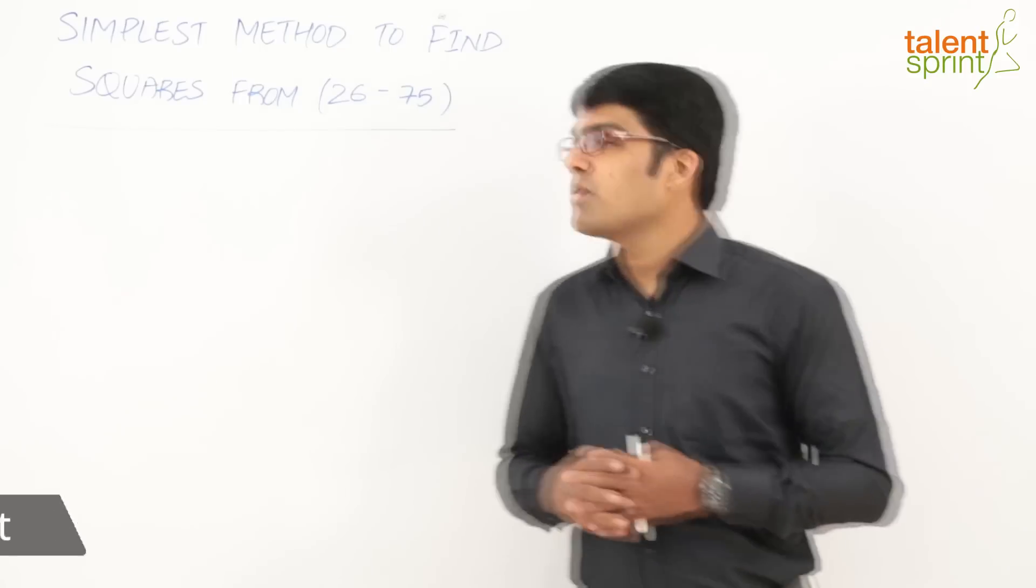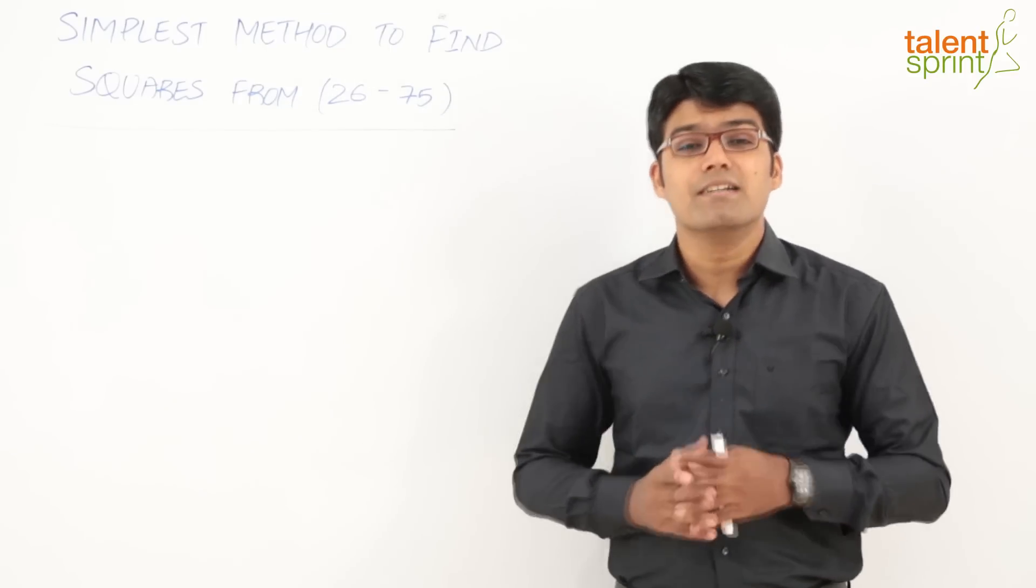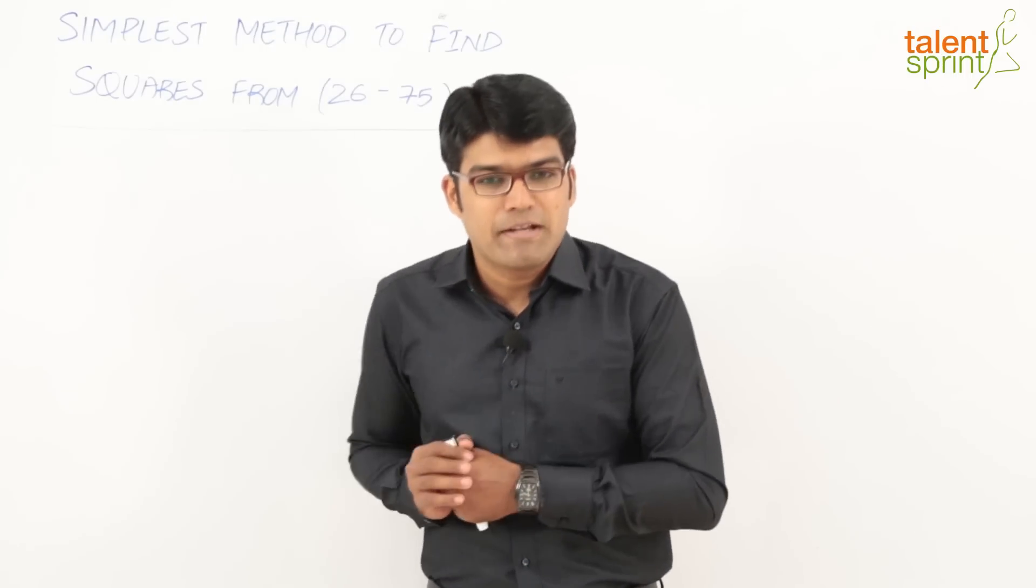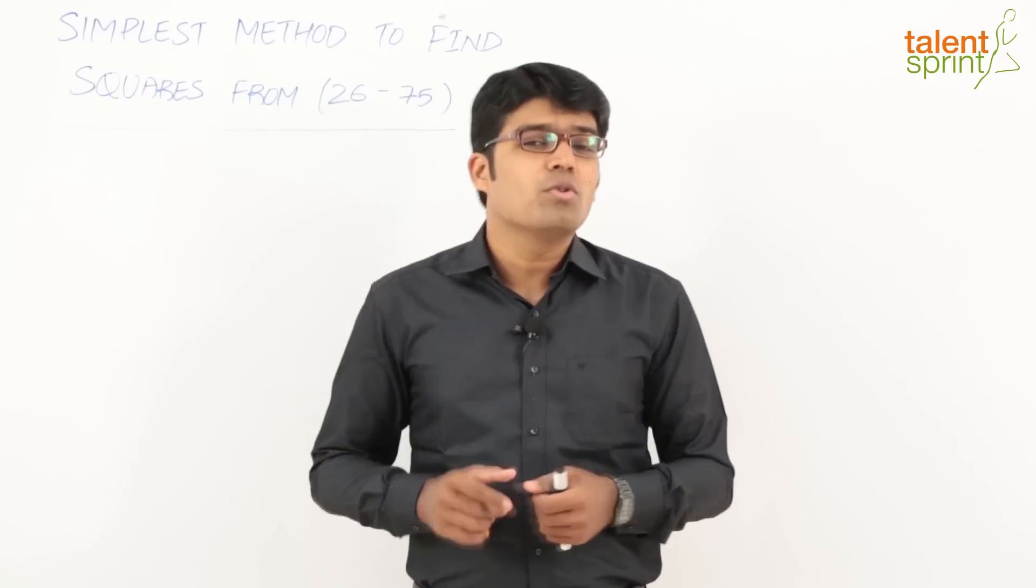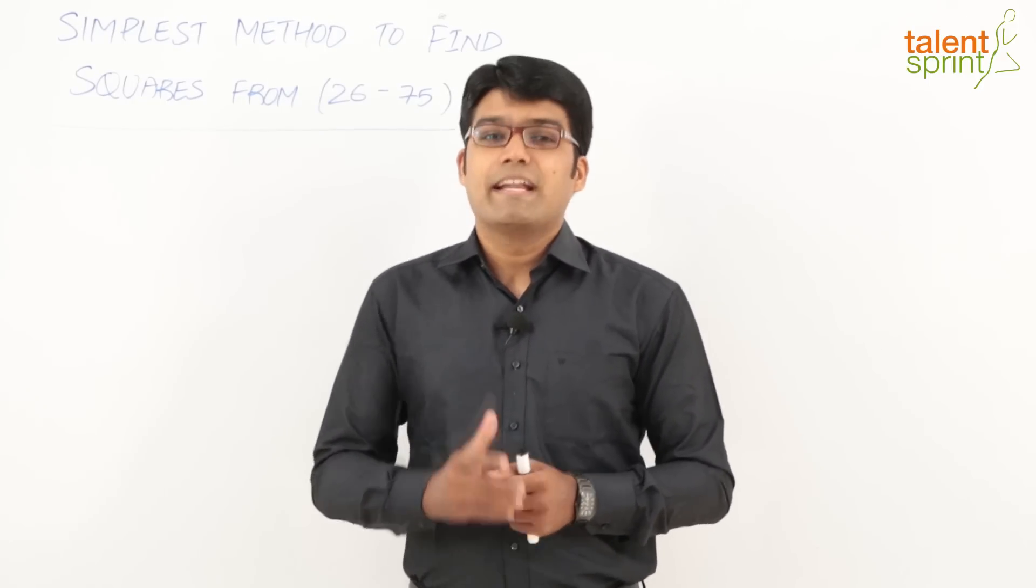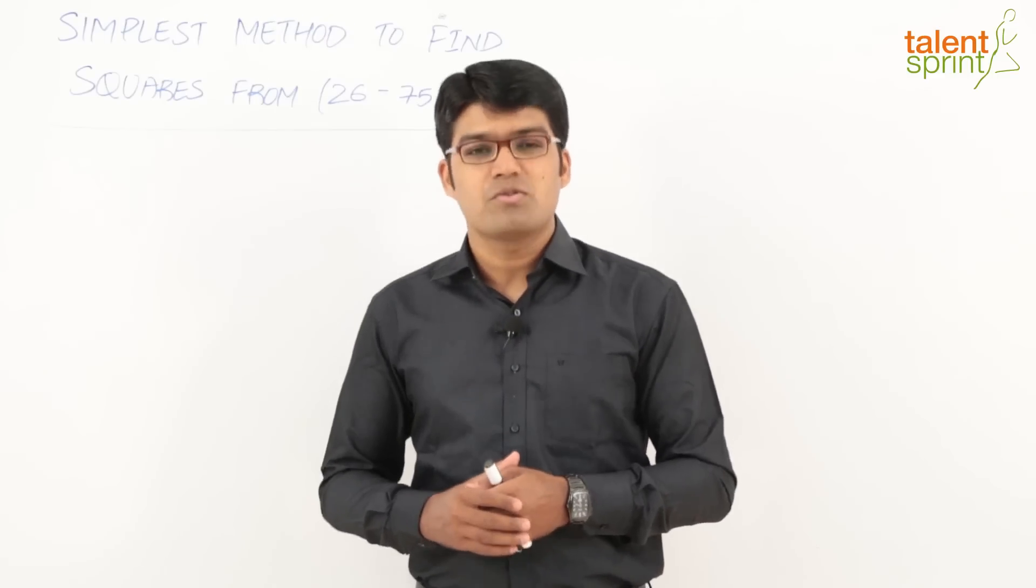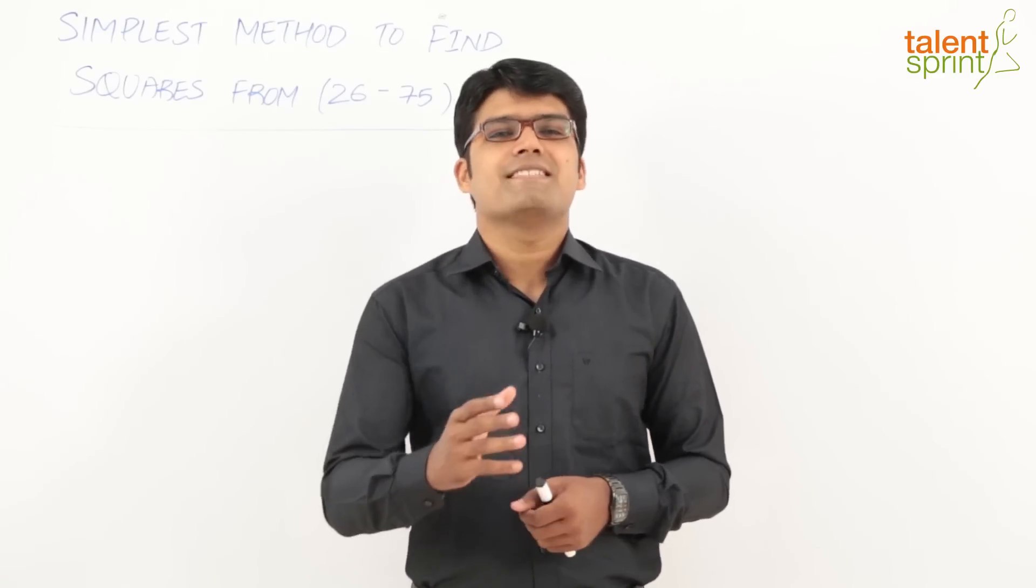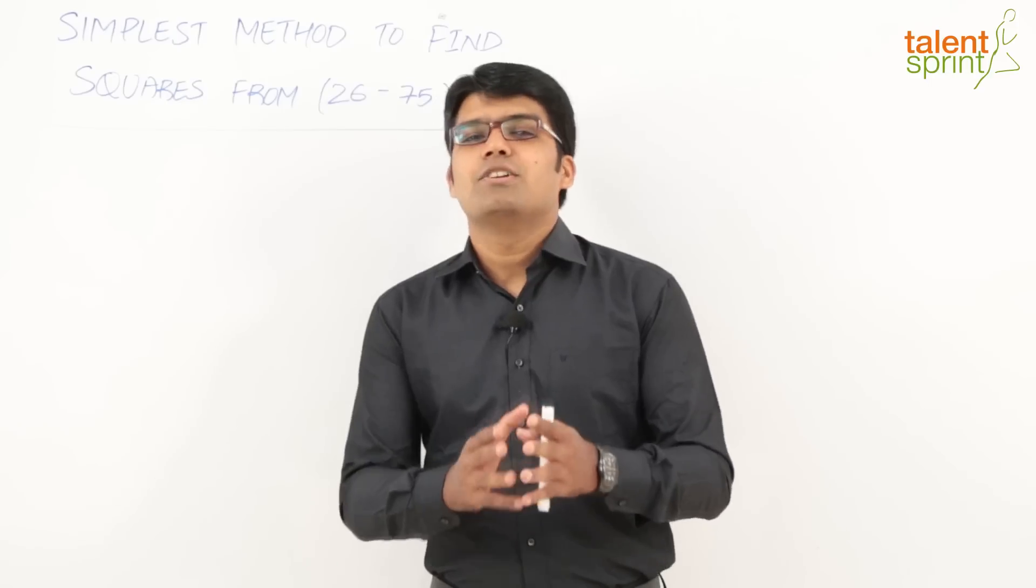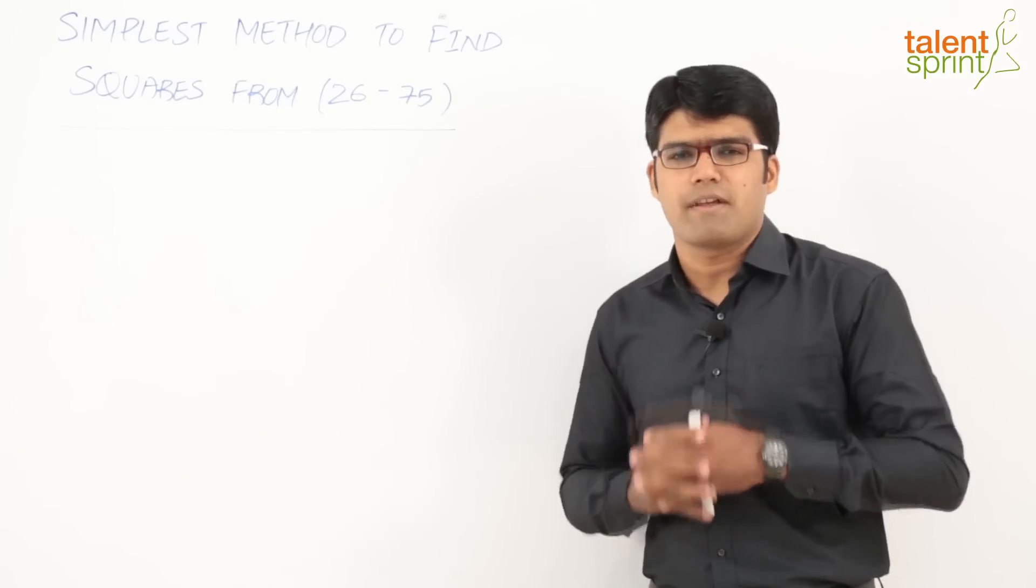In this session today, we are going to look at the simplest method to find the squares of numbers between 26 and 75. So if you are one of those guys who calculate squares on paper, then do not worry. At the end of this video, you will find yourselves doing the same without paper in just about 3 seconds. So let us look at this simplest technique to get squares of numbers ranging from 26 to 75.